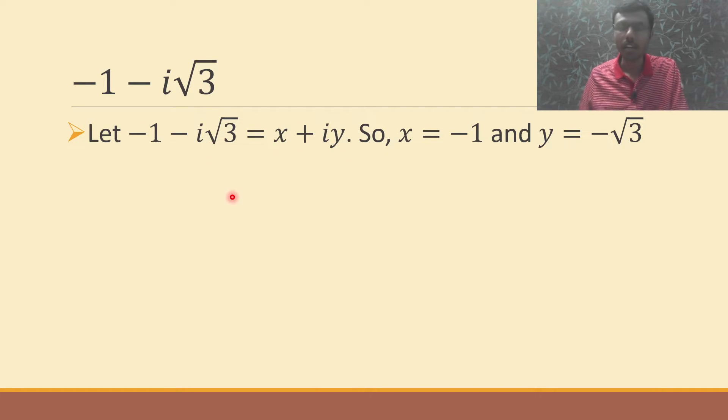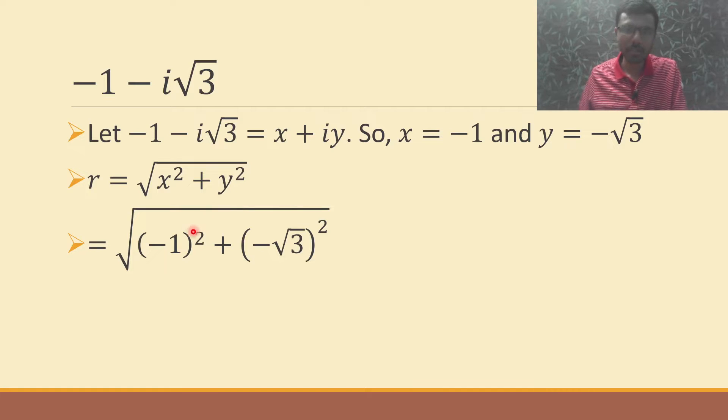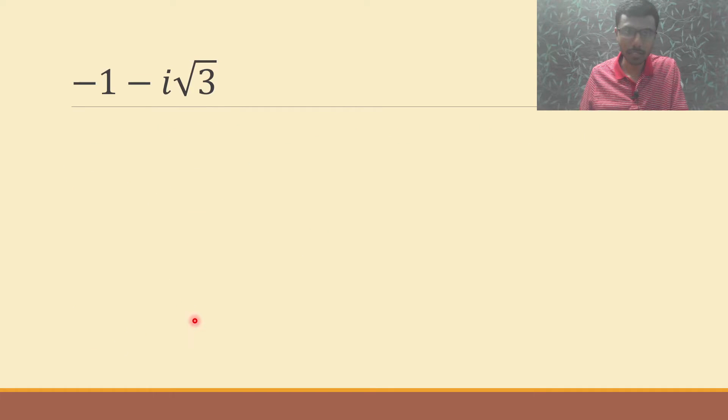Now the formula for r is r = √(x² + y²). Just substitute: (-1)² + (-√3)² under root. -1 squared is +1 because any negative number squared will be positive. Here also, negative number squared will be positive, and √3 whole square is nothing but 3. So ultimately I'll get 1 + 3, which is √4, which equals 2.